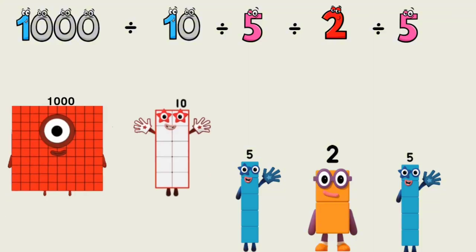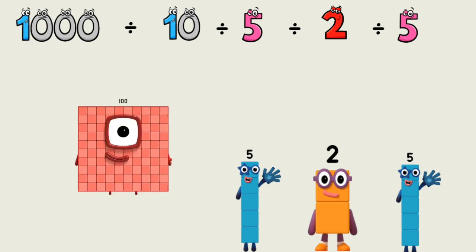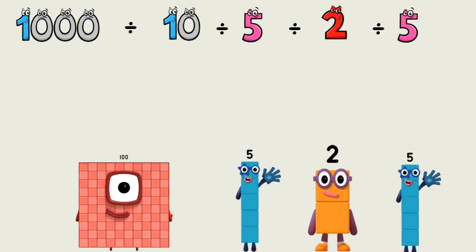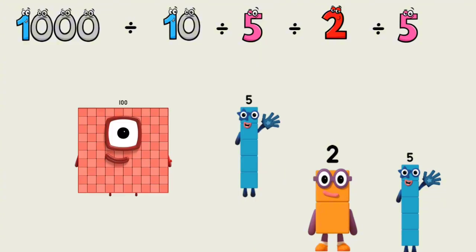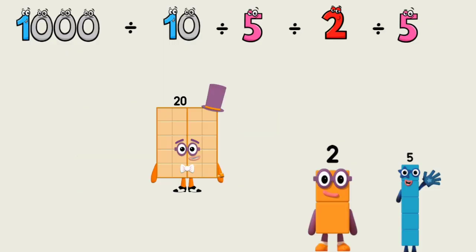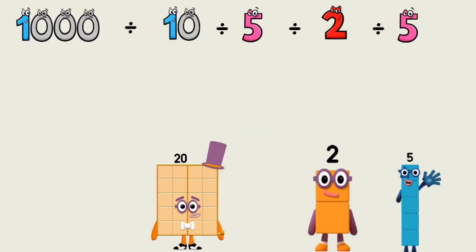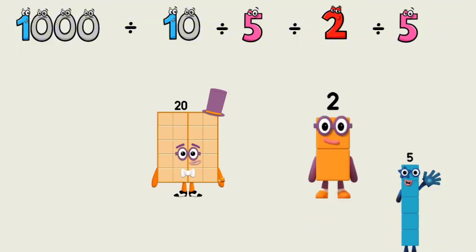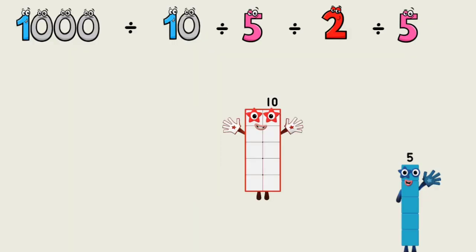Number blocks: 1,000 divided by various numbers. 1,000 divided by 10 equals 100. 1,000 divided by 10 divided by 5 equals 20. 20 divided by 2 equals 10.